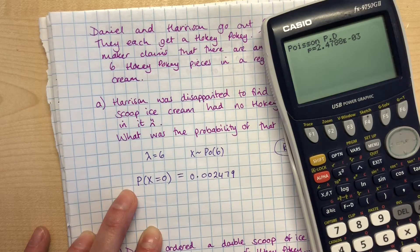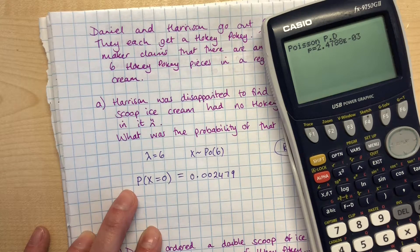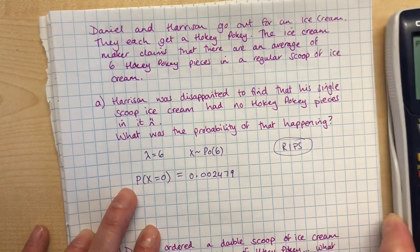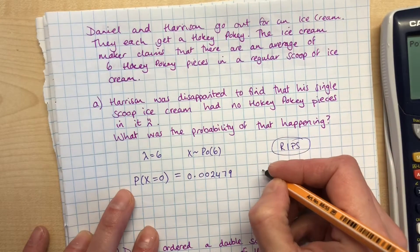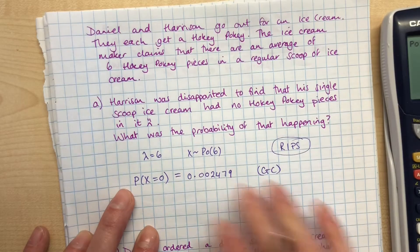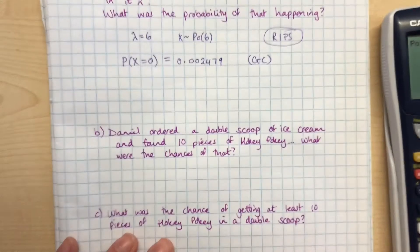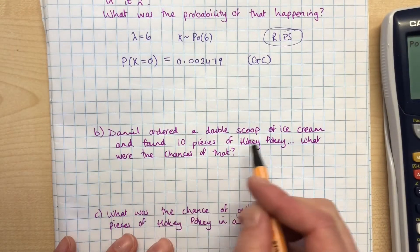We get our answer looking like this. Now that minus three there means that it's a very small number, and our two starts in the third decimal place, so we write that as 0.002479. With these distribution questions we tend to go to four decimal places - that's mostly because that's what the tables go to if you had to read this off of a table instead of your graphics calculator. If you're answering this on an exam paper question, I just put a little GC in brackets to say you've got no working out there because you did it on the graphics calculator.